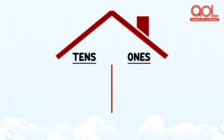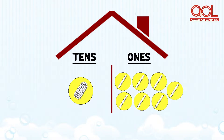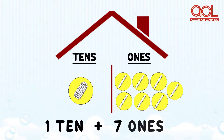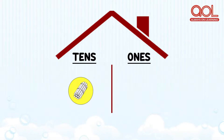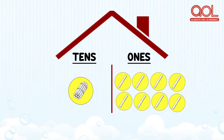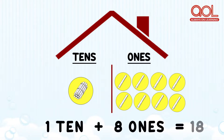Let's see the next number. We have one ten and eight ones. One ten and eight ones makes number eighteen.